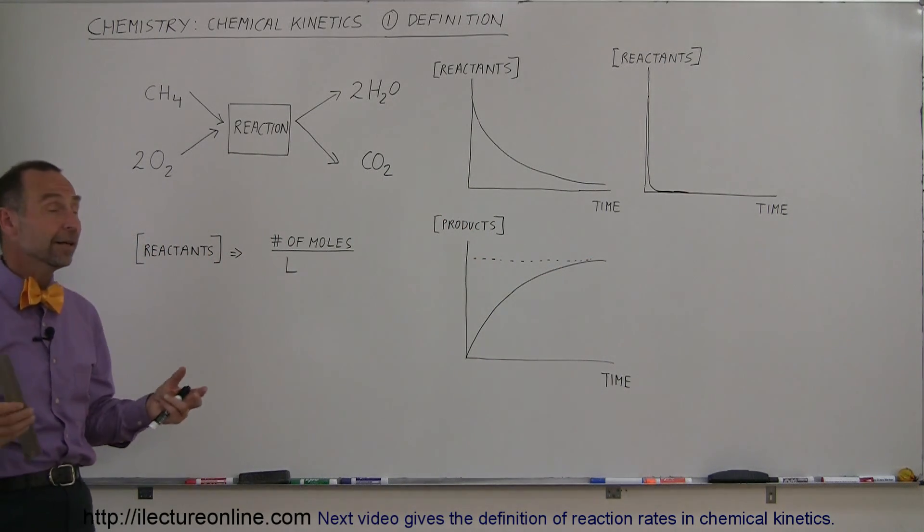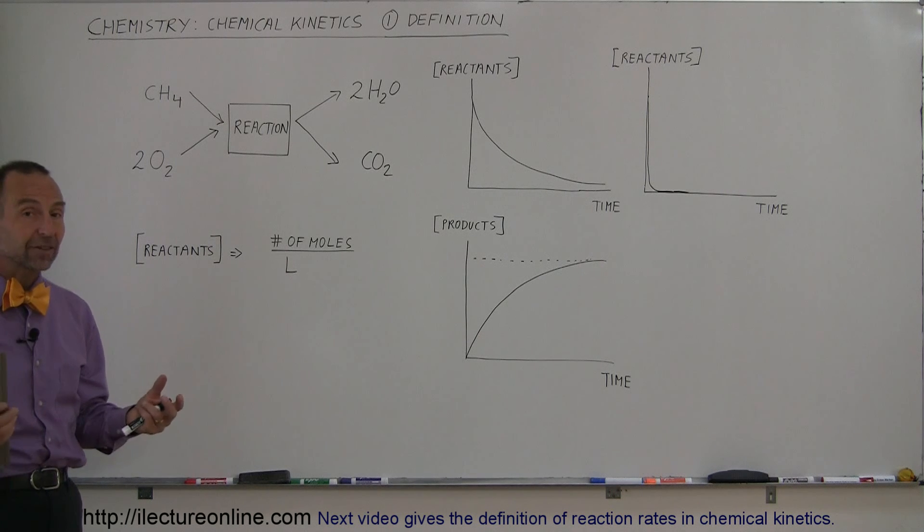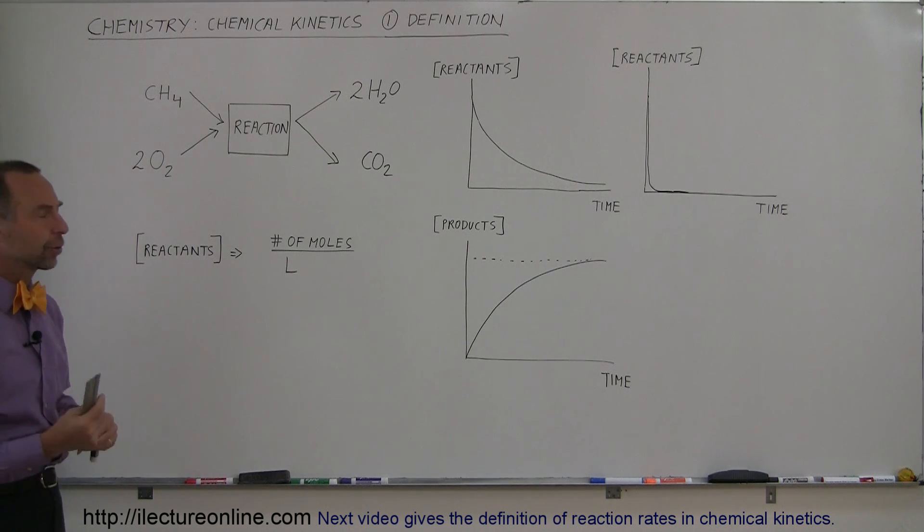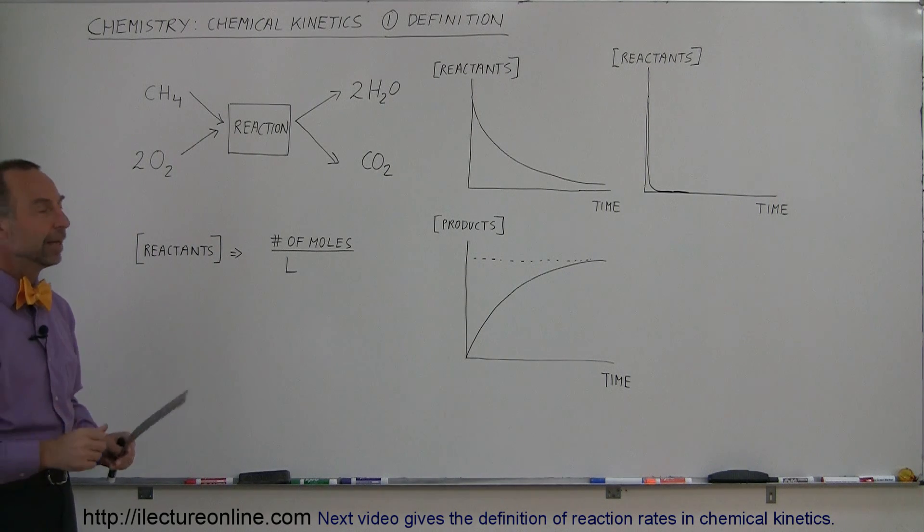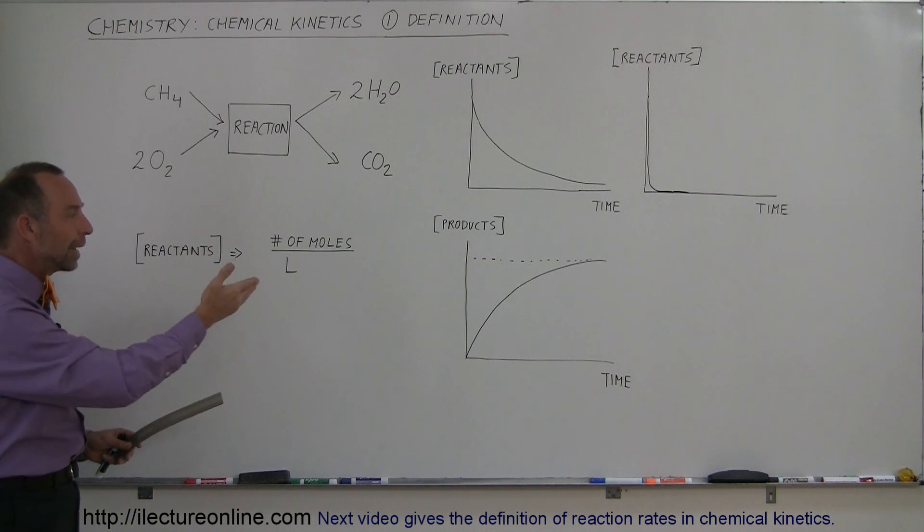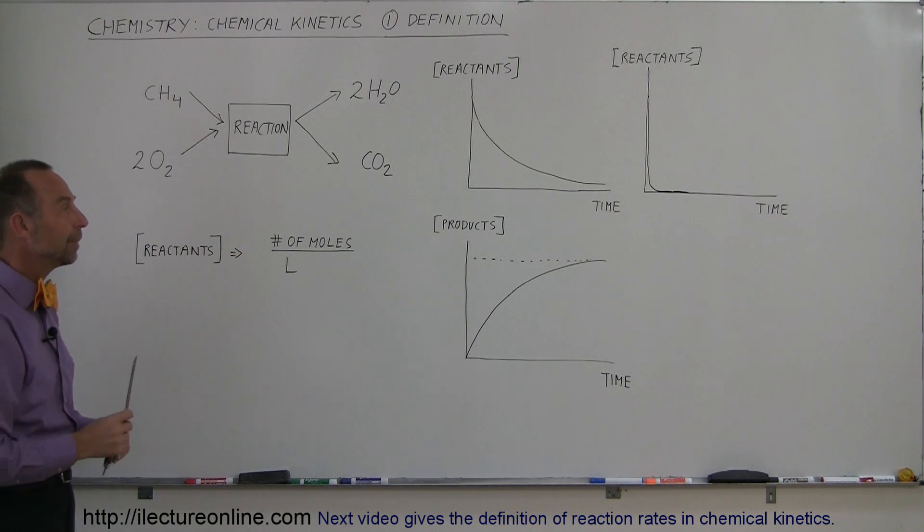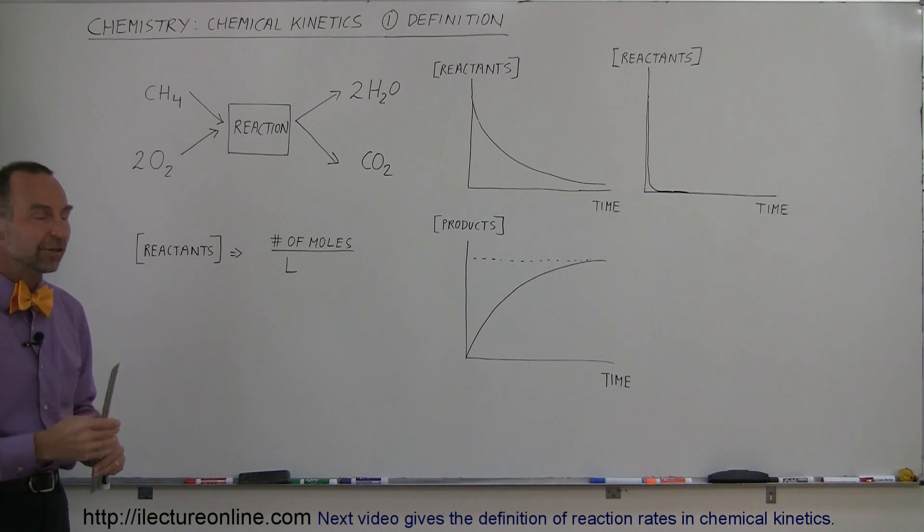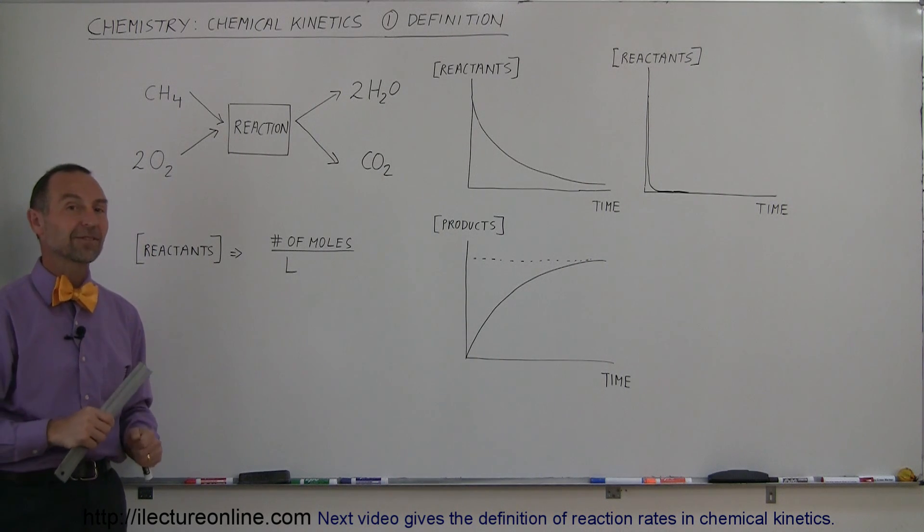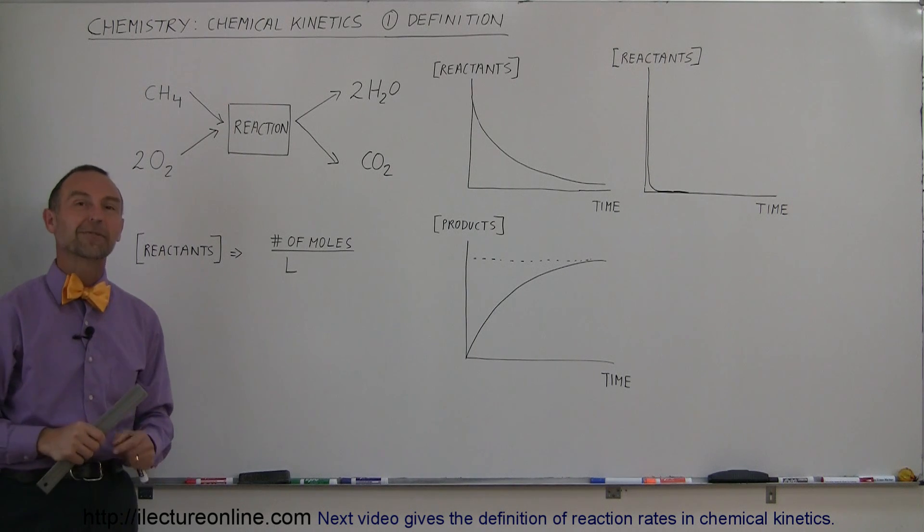So hopefully that gives you an idea of what we mean with chemical kinetics. It's simply the rate at which reactions are occurring. In the next videos we'll give you a good idea of how to actually calculate all those things and keep track of them and actually come up with the exact rate at which these things are happening over time and the exact change of the reactants and products as the reaction takes place. That's what chemical kinetics is. If you're interested, stay tuned for the next videos.